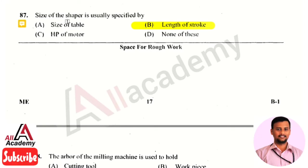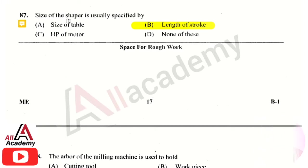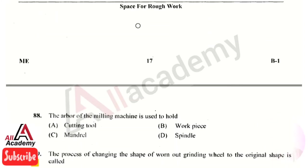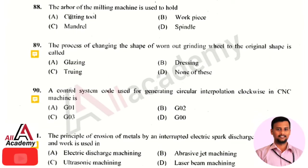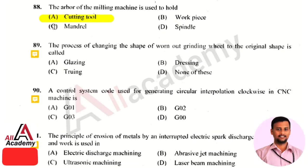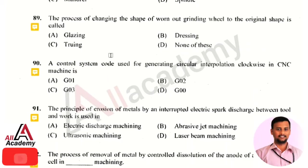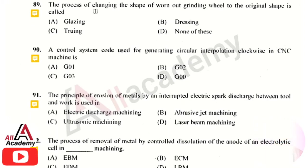The next question: the arbor of a milling machine is used to hold — the right answer is option 1, that is the cutting tool. A cutting tool or milling tool is mounted on an arbor in a milling machine.